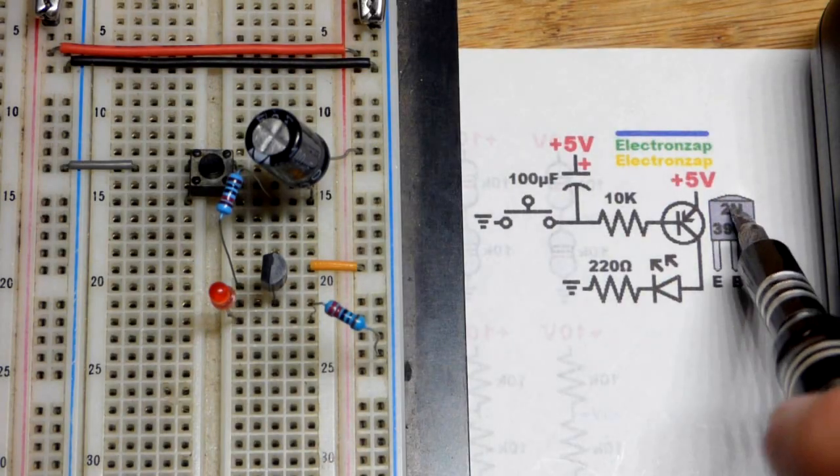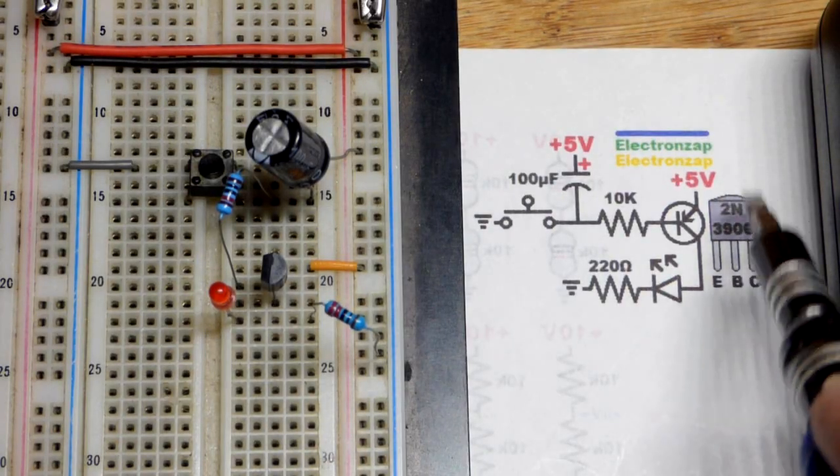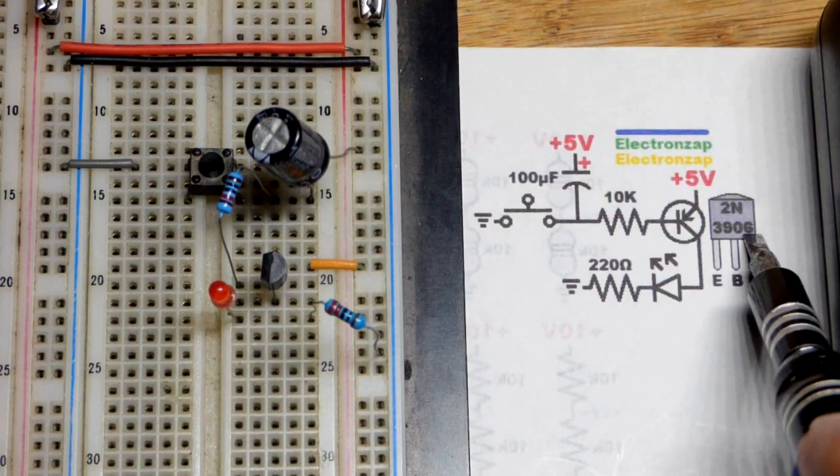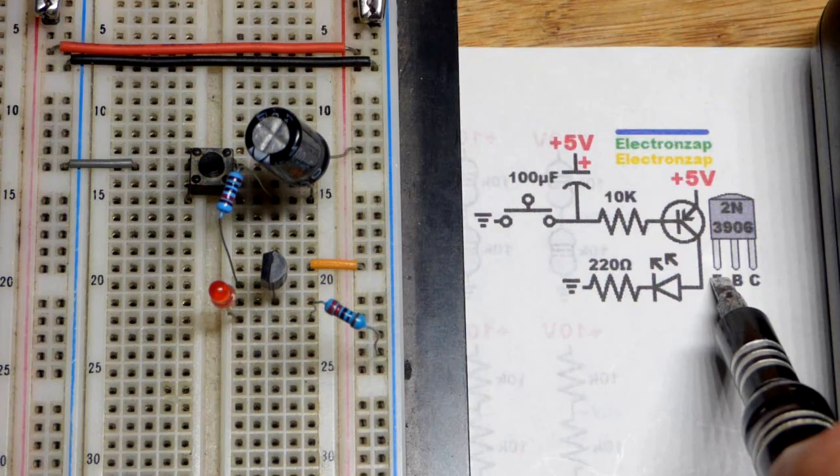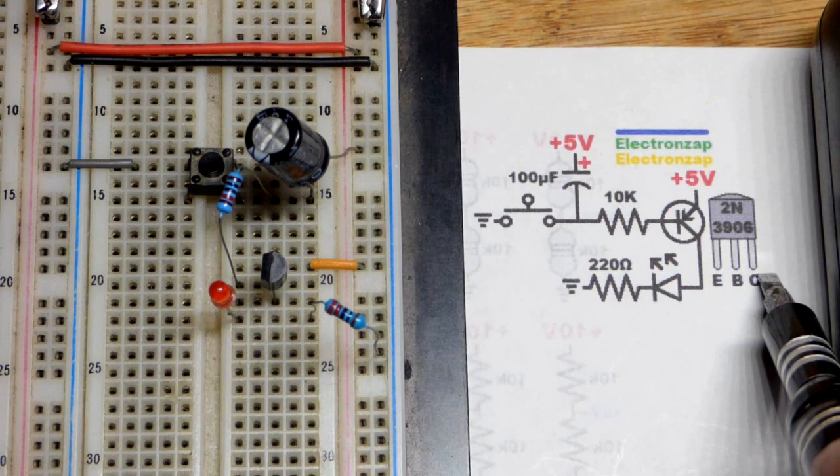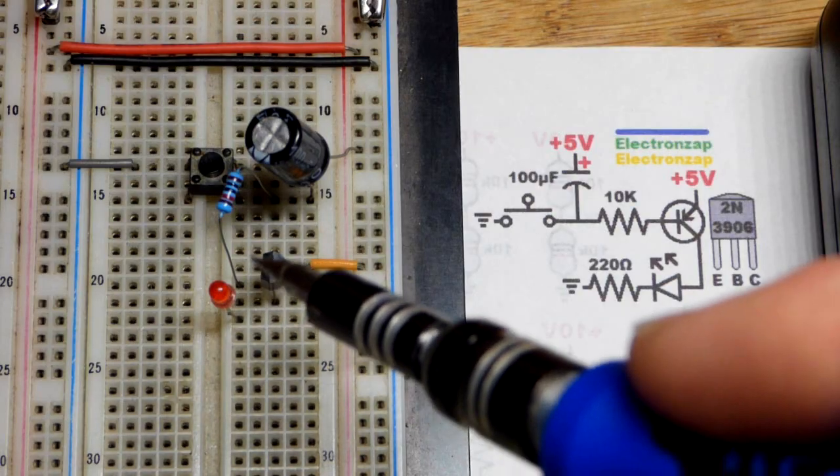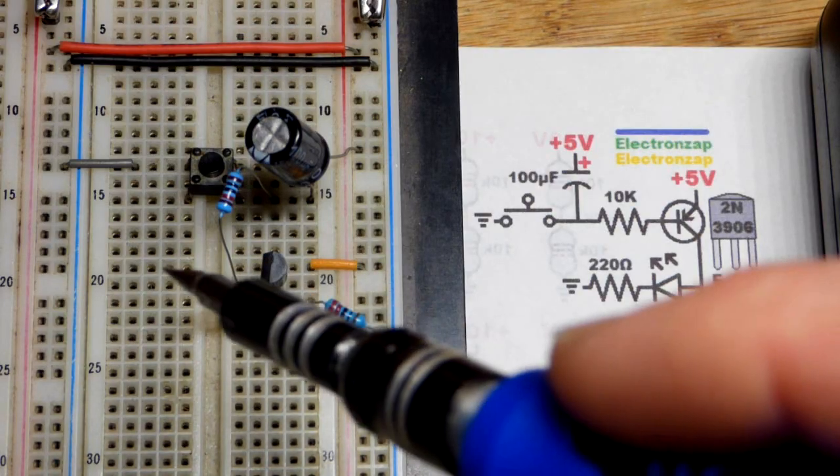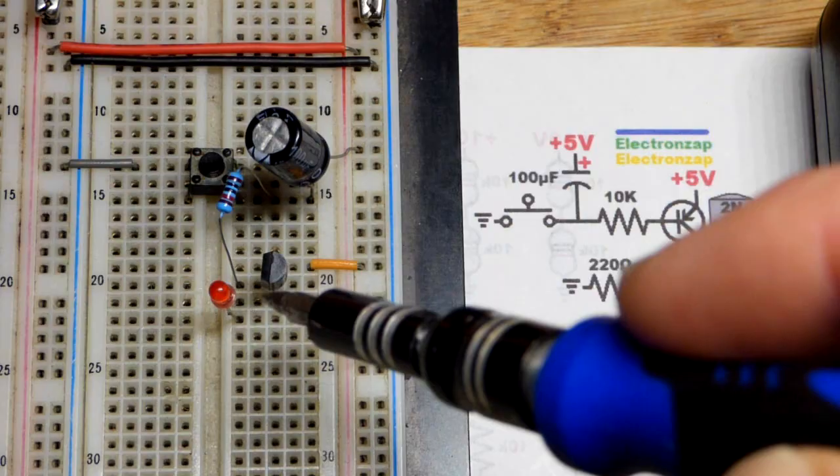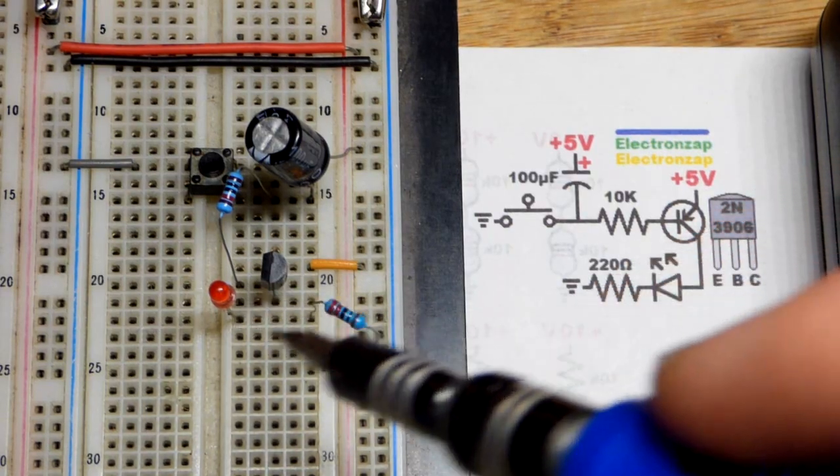So now in this video, we're going to look at the PNP bipolar junction transistor. I'm using a 2N3906. This is the pin layout: left pin is emitter, base, collector. But when you swivel it so that the flat side is to the left, now it's emitter on top, base in the middle, and collector down there.